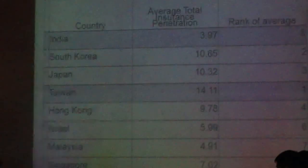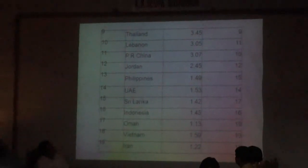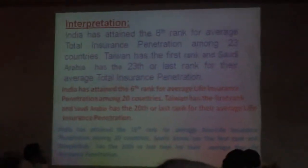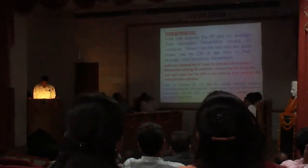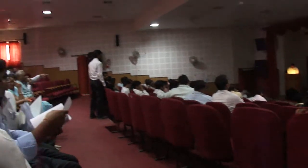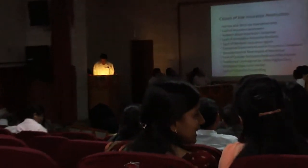This table shows insurance penetration rankings. India has attained 8th rank; Taiwan got the 1st rank, and Saudi Arabia has the 23rd or last rank for average total insurance penetration. For life insurance penetration, India has attained 6th rank among 20 countries; Taiwan has the 1st rank and Saudi Arabia the 20th or last rank. For non-life insurance penetration, India has attained 16th rank among 20 countries; South Korea has the 1st rank and Bangladesh has the 20th or last rank.